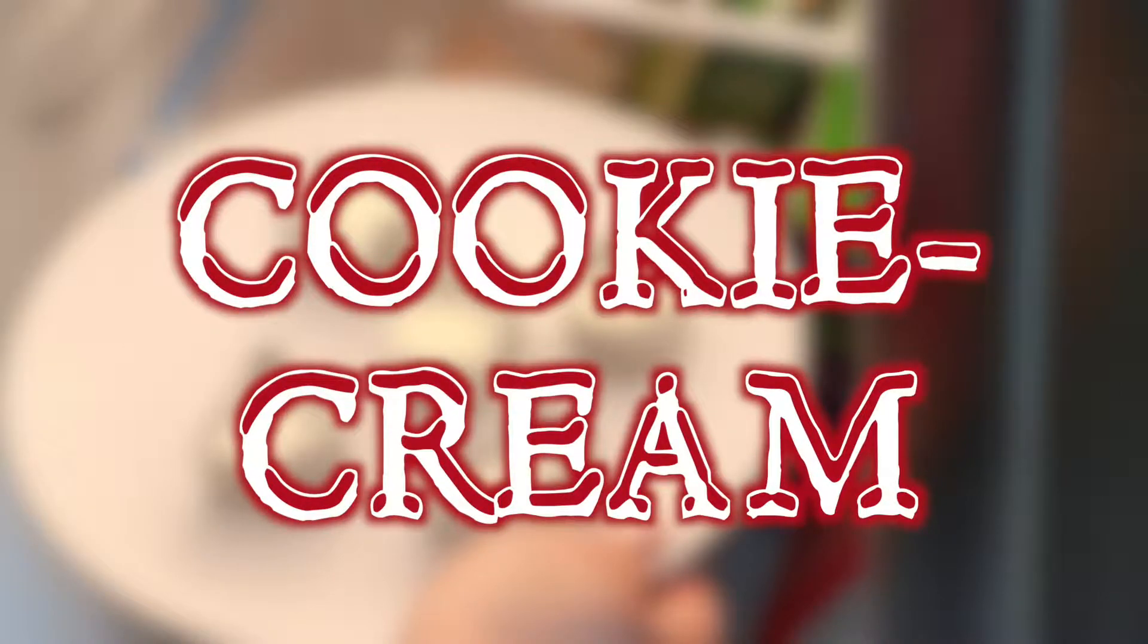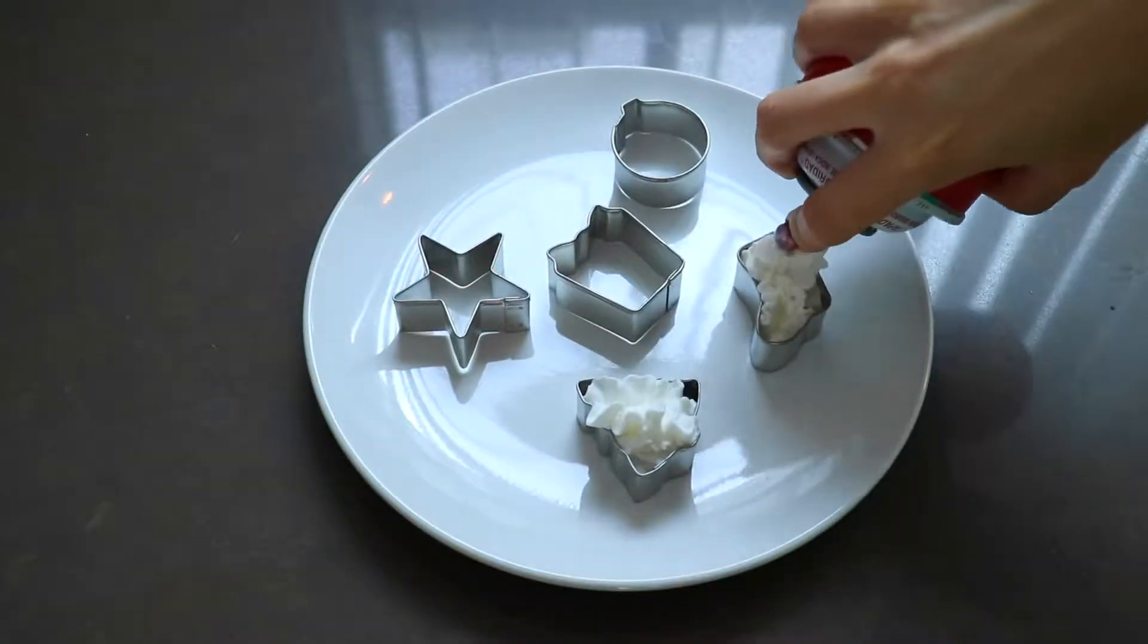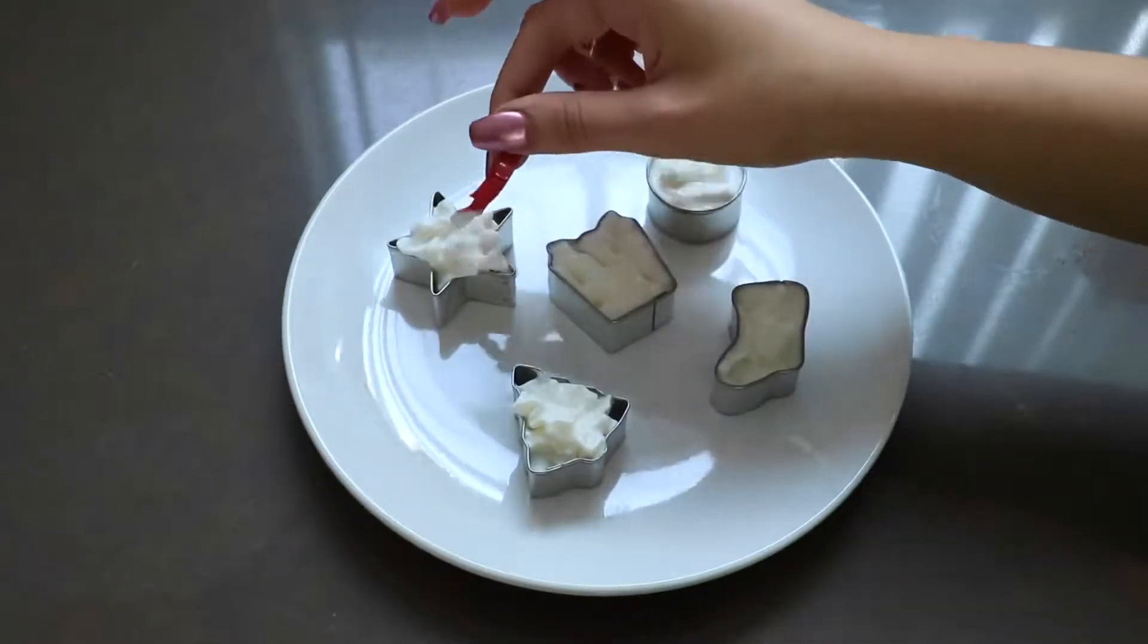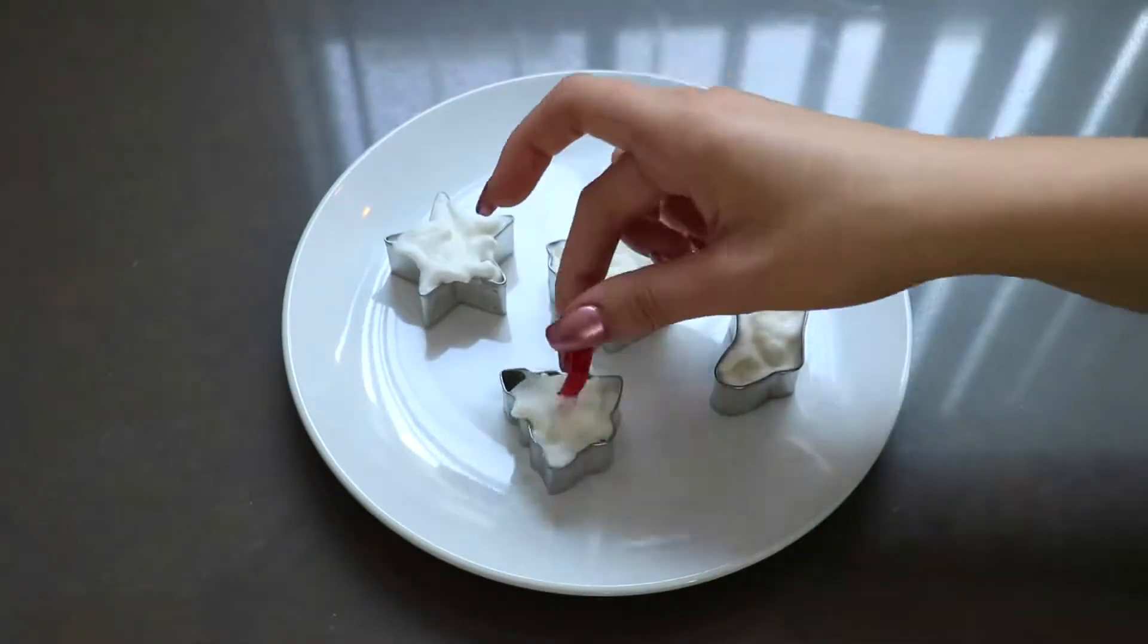Number two, cookie cream. So we're going to take some mini cookie cutters and just put some whipped cream in there. And then I kind of let it melt down a little bit so it would fit the shape perfectly. And then I put it in the freezer and waited for it to freeze.